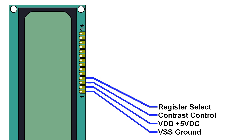The next pin is register select. The screen can accept two types of information. One is text data — basically just putting ASCII characters on the screen. The other option is instructions, which tells the screen to do stuff like turn the cursor on, initialize the display, create graphics characters, things like that.